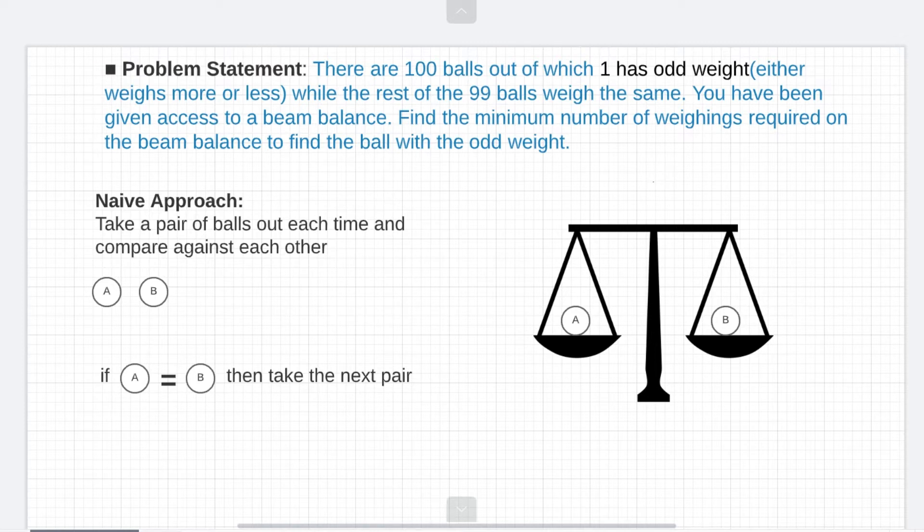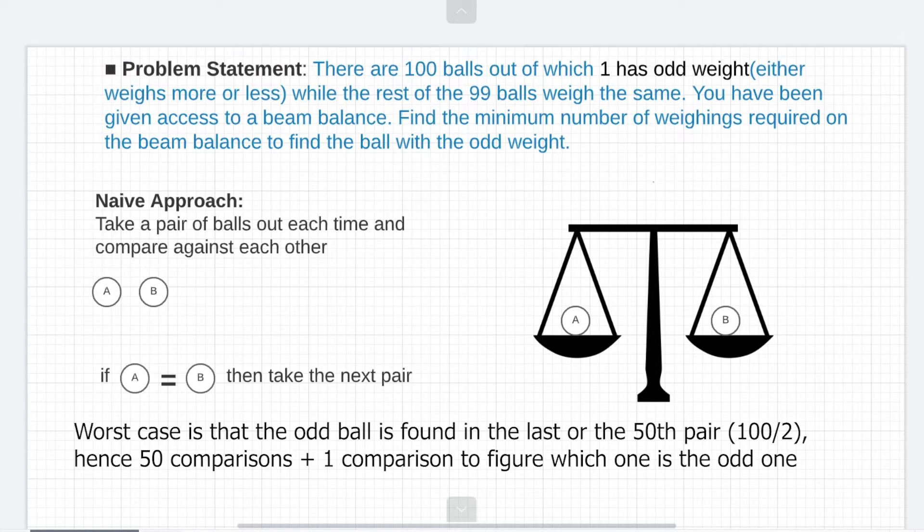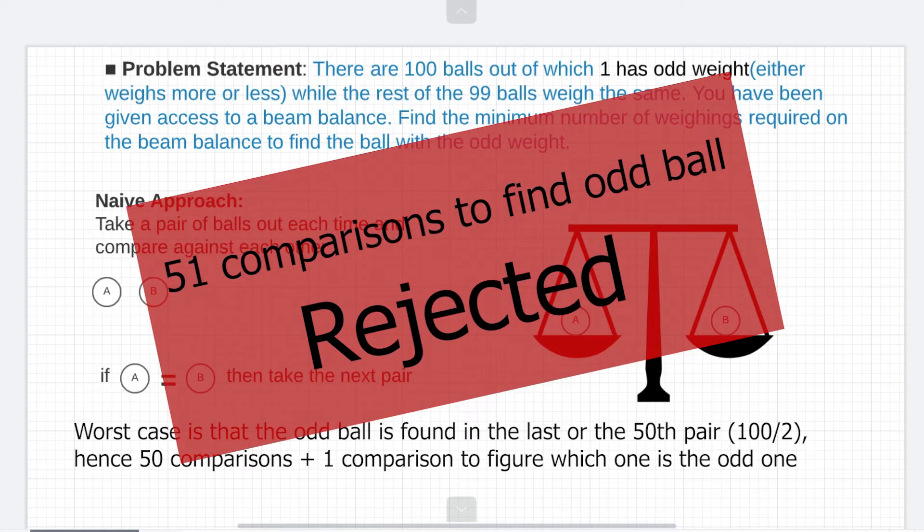Now this approach will definitely work but the problem with this approach is that the worst case scenario will be that the last pair of balls left in the set has the odd ball. So in that case you'll have to make 50 comparisons just to reach to that last pair which has the odd ball. So using this naive approach you'll have to use the beam balance 51 times in the worst case which is not an ideal solution to the problem. And if you tell the interviewer this answer you'll probably be rejected.